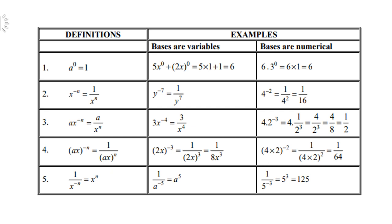x to the power negative n equals 1 over x to the power positive n. For instance, y to the power negative 7 is 1 over y to the power 7. Or 4 to the power negative 2 is 1 over 16. Take note with a times x to the power negative n: a remains in the numerator, but only x goes down because x has the negative exponent.